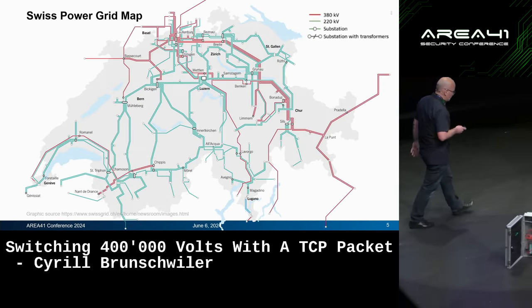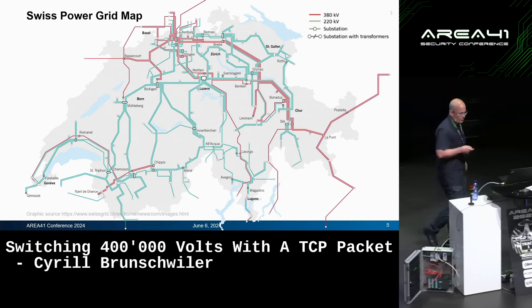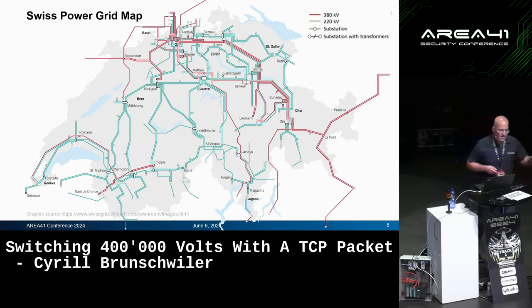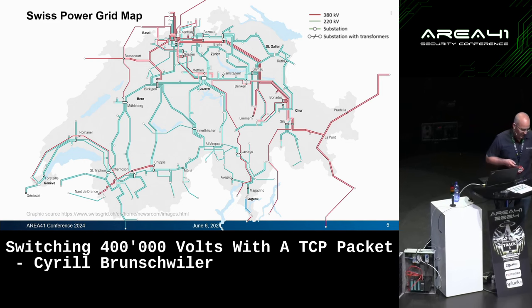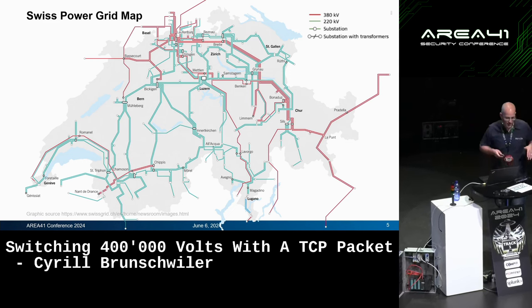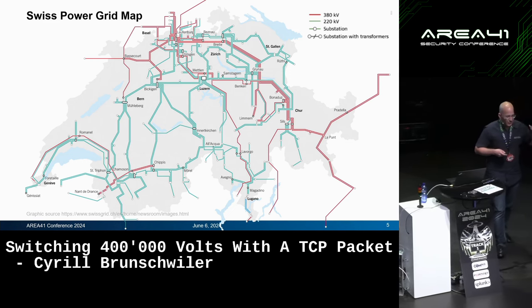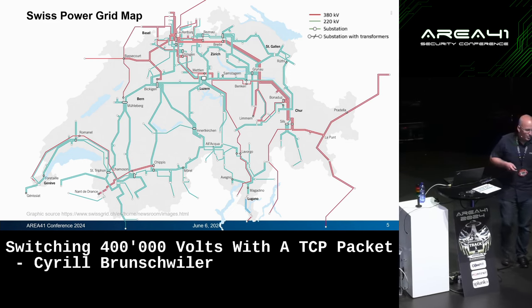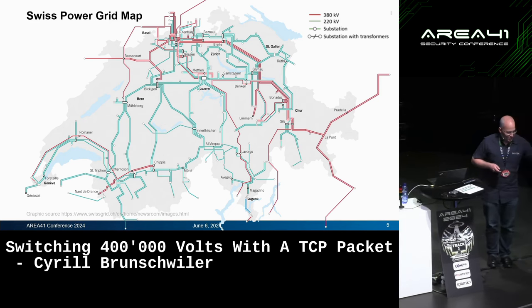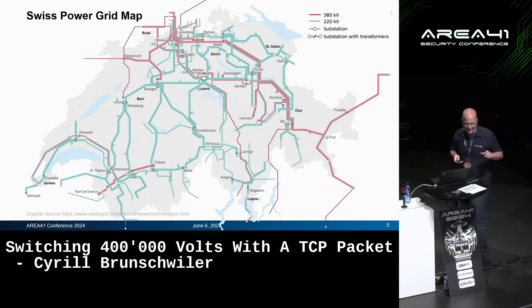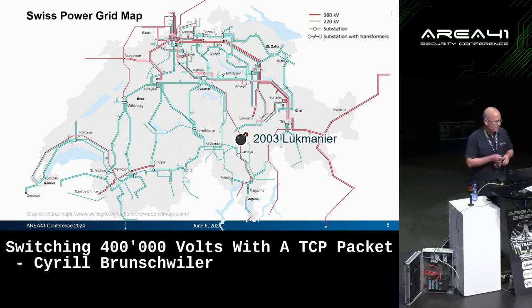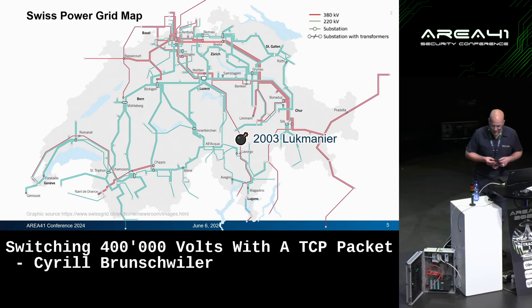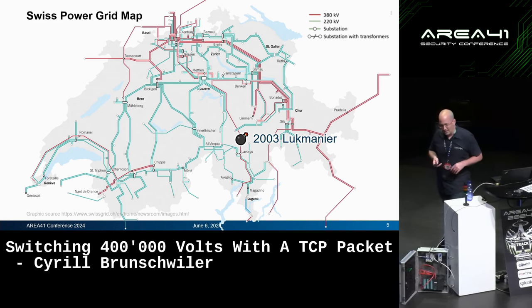Here's a map of Switzerland showing the transmission network. If you ever see footage from the control room at Aarau from SwissGrid and there are red lines, that's not a problem — it's just the 380 kilovolt lines. The green ones are the 220 kilovolt lines.